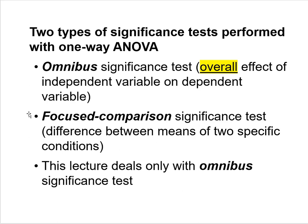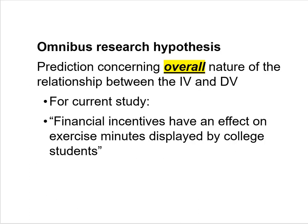We will deal with focused comparisons later. Right now, the current lecture deals only with the omnibus significance test — was there an overall effect of my independent variable on the dependent variable? The omnibus research hypothesis is your prediction concerning the overall nature of the relationship between the independent variable and the dependent variable. For our investigation, it might say: financial incentives have an effect on exercise minutes displayed by college students.